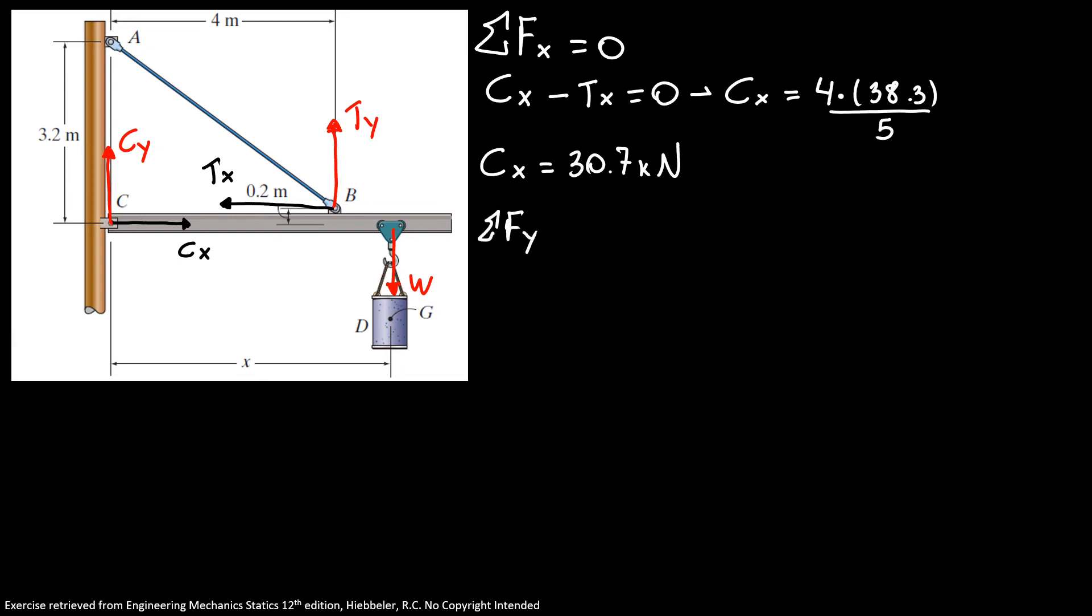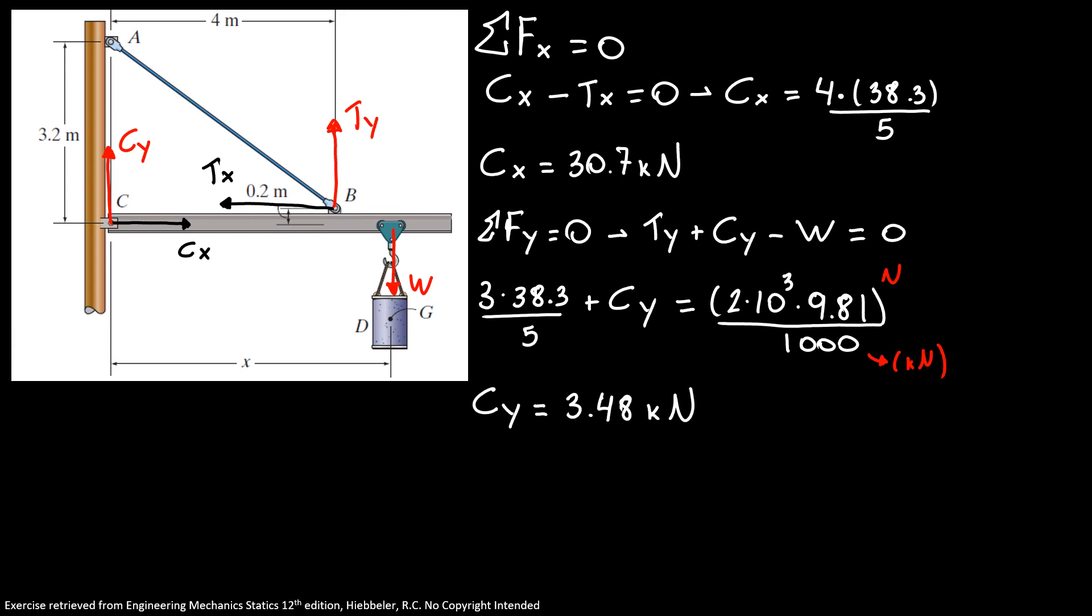The sum of forces in Y direction equals 0. I have TY plus CY minus weight equals 0. TY is 3 times 38.3 over 5 plus CY that we don't know equals 2 times 10 to the third times 9.81 divided by 1,000. Why divided by 1,000? Because this upper part is in newtons, so I'm correcting to having kilonewtons. Here I have CY equals 3.48 kilonewtons.